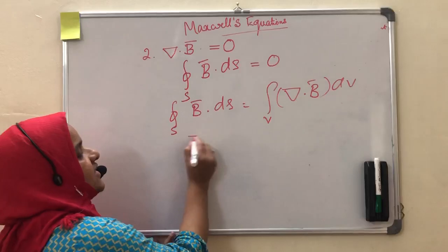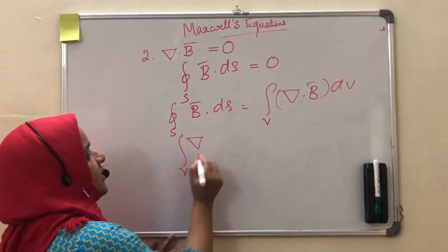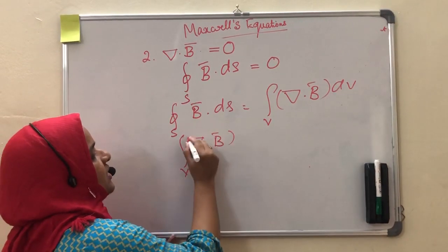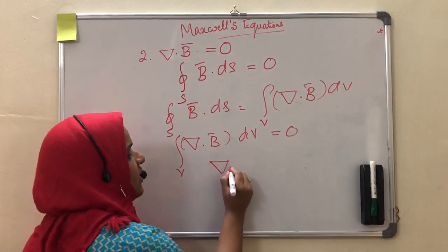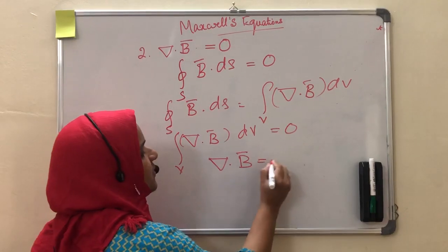Substituting this on the left hand side, volume integral of del dot B dv is equal to 0. Removing the integral sign, del dot B is equal to 0.